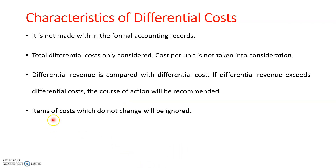The third feature is that items of cost which do not change will be ignored. If a cost element shows no change between the present situation and the proposed situation — for example, if there is no change in fixed cost — it has no relevance and will not be included in the differential cost. Only costs that have changed due to a change in the method of production or similar factors will be included.